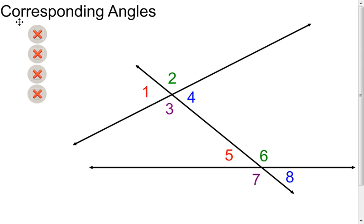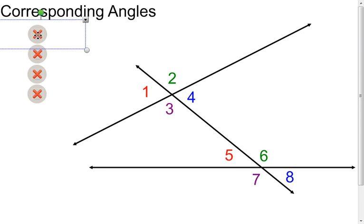The first type of angles we're going to refer to are called corresponding angles. I like to think of corresponding angles as angles in the same place, but different location. This line and the transversal create four angles up here, and the transversal and the line create four angles down here. I'm going to find an angle that's up here — I'll go with angle one. It's above the line and to the left of the transversal. I'll come down here and find an angle that's above the line and to the left of the transversal, which would be angle five. Therefore, angle one and angle five are corresponding angles.